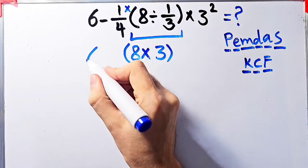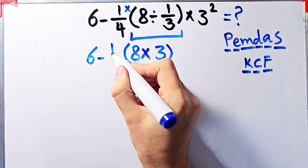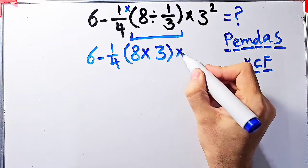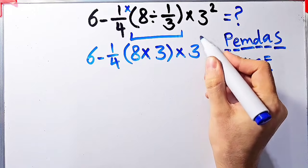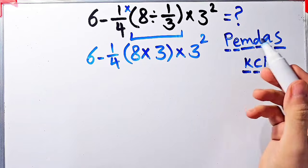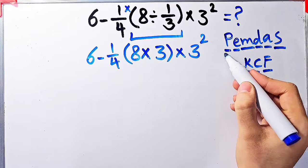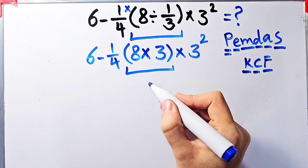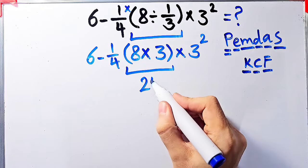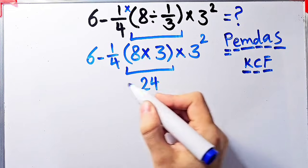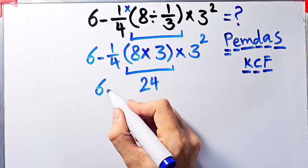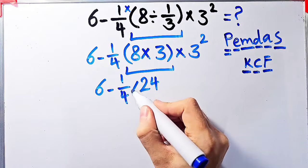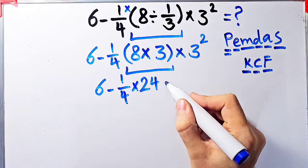Now we have a new expression: six minus one over four, then times open parenthesis, eight times three, close parenthesis, then times three to the power of two. Again, we simplify the parenthesis: eight times three equals twenty-four.